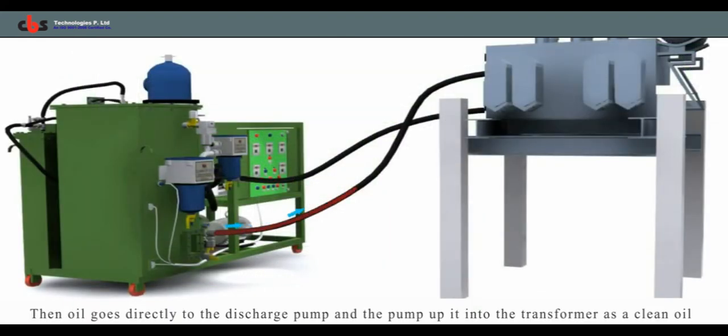Then clean oil goes directly to the discharge pump inlet from the degassing chamber, that pumps the oil into the transformer inlet with improved BDV, acidity, moisture, and temperature.